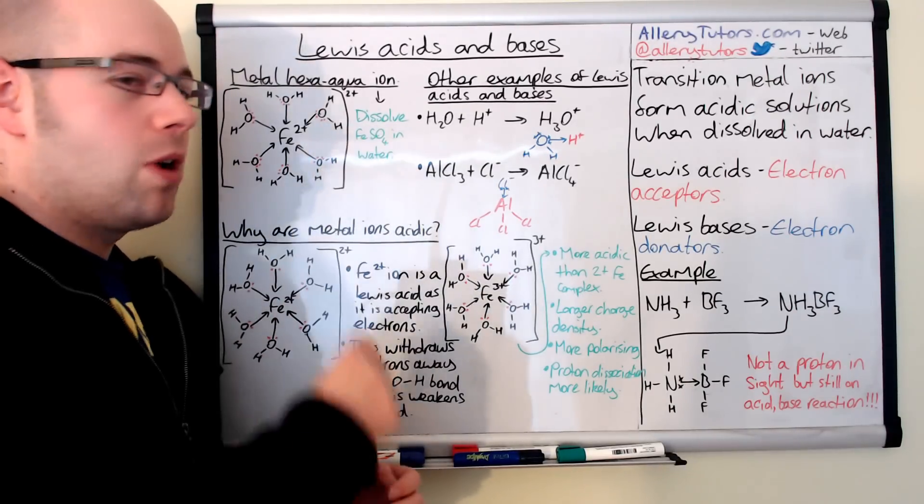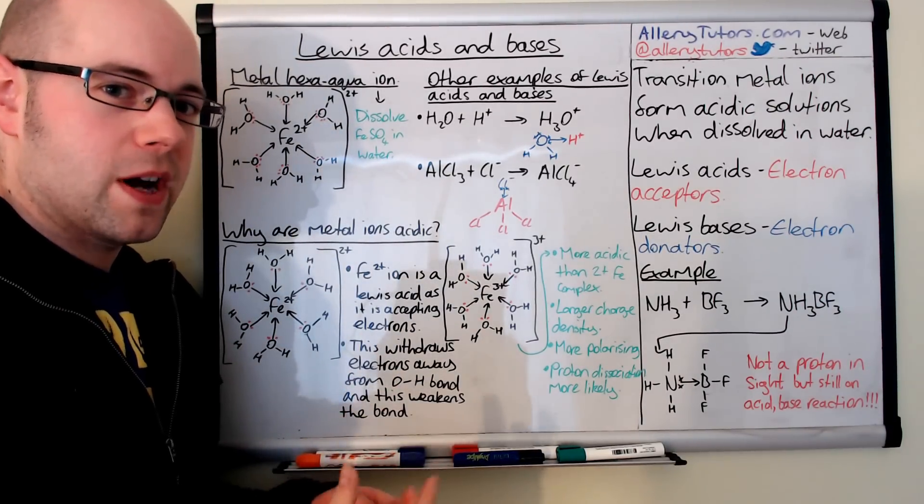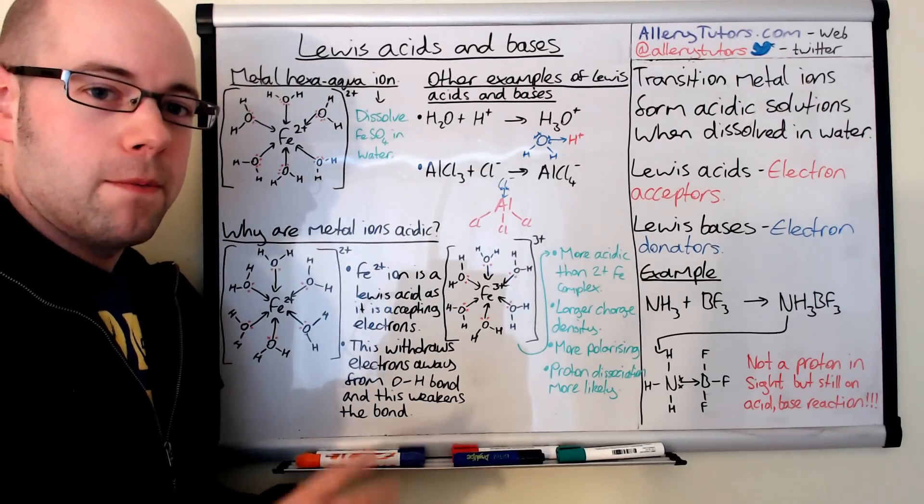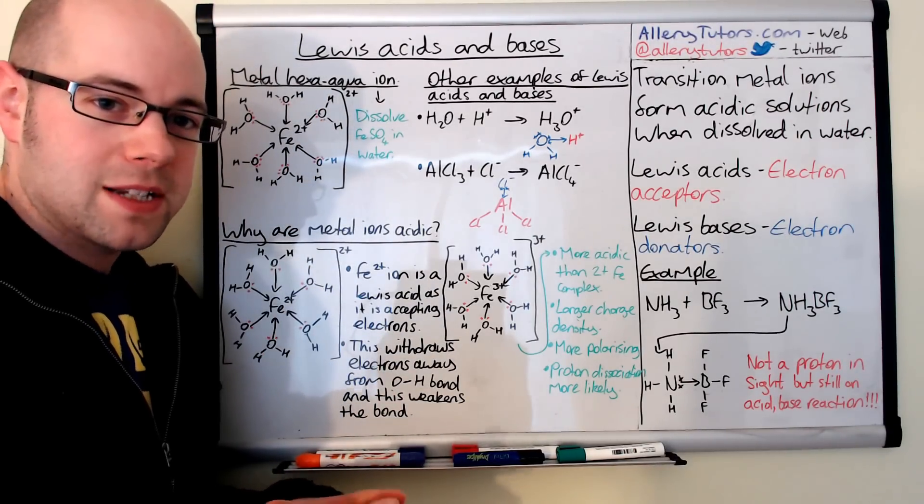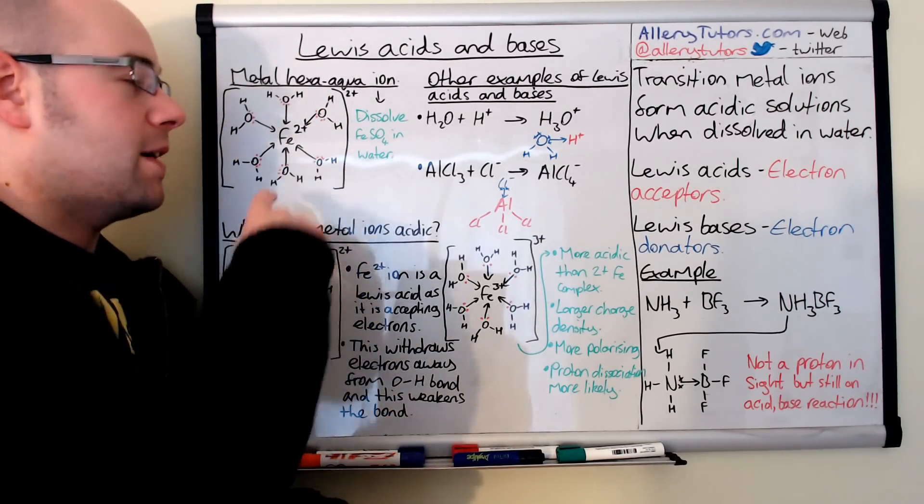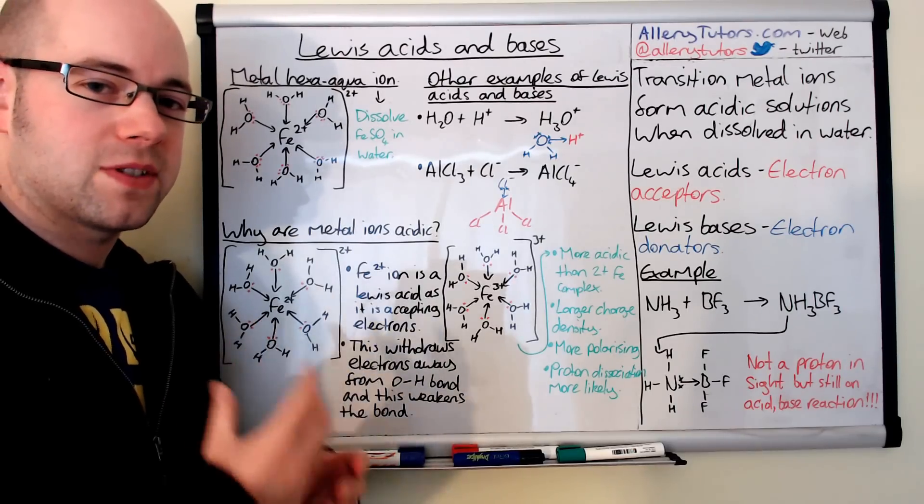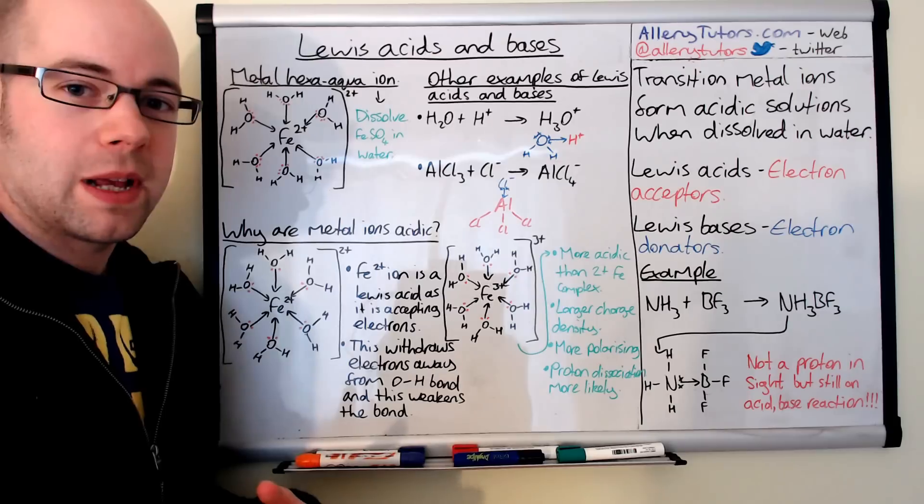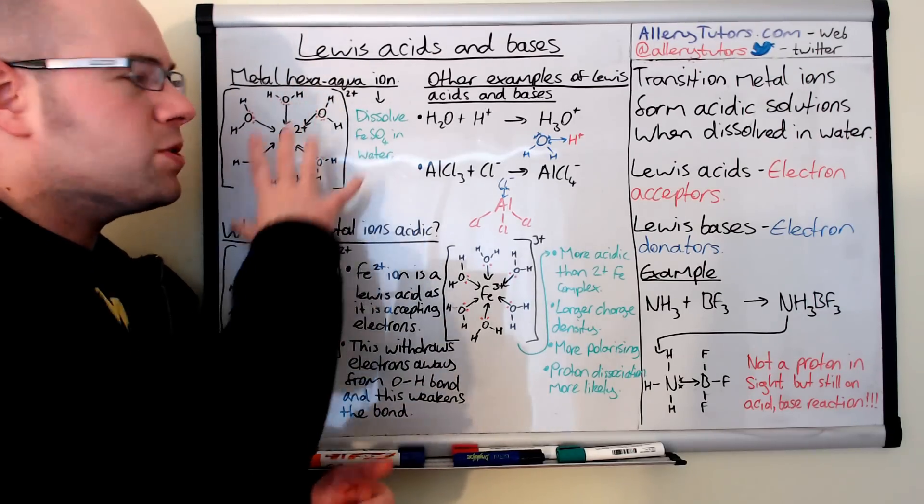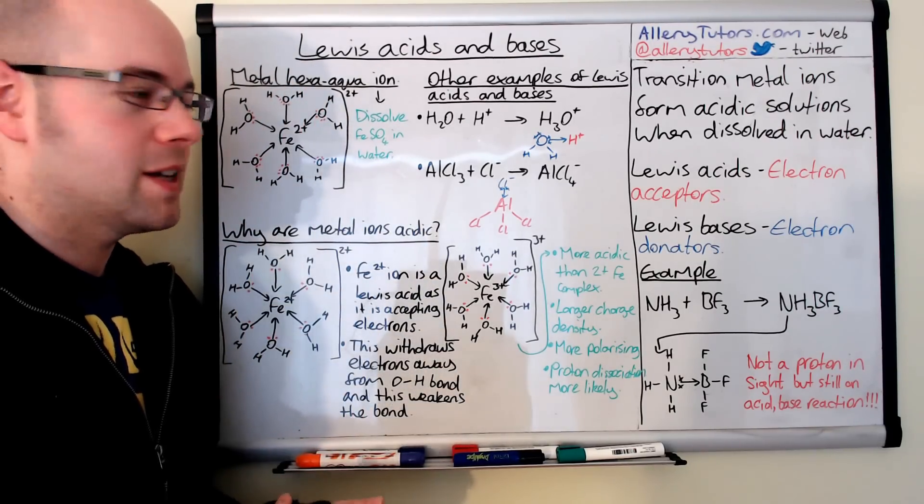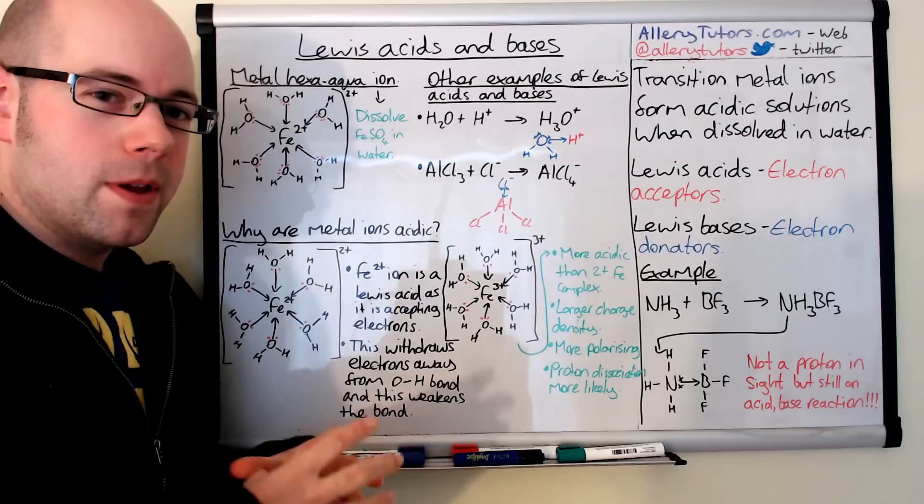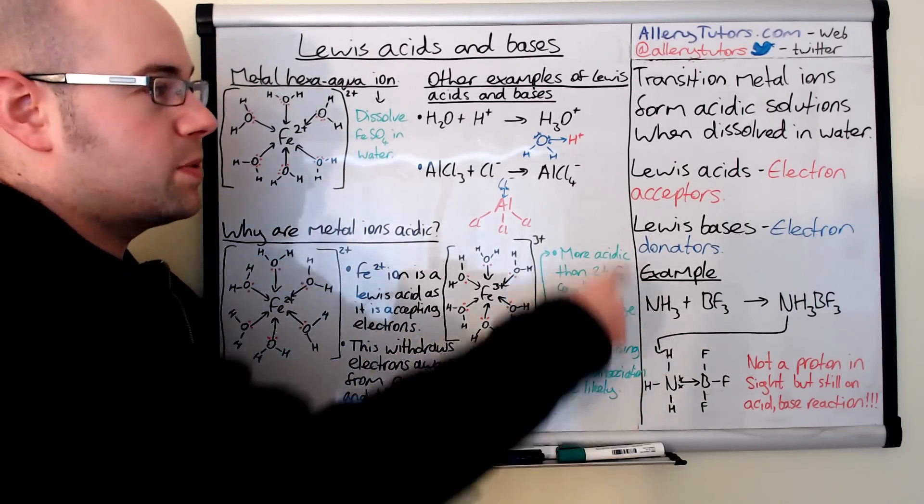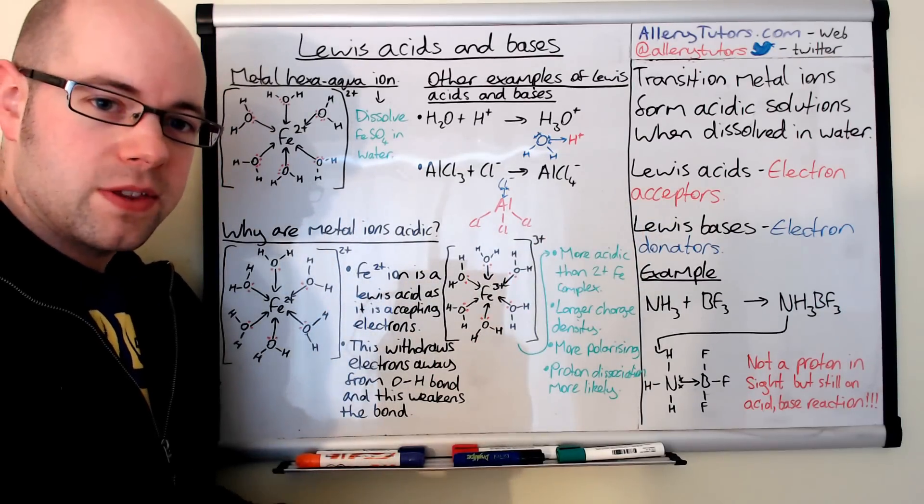The iron is no longer bonded to the sulfate but the sulfate ion is still in solution. Now the iron is surrounded by water ligands, and we call this a metal aqua-ion. Because we have six of them, we call it a hexa aqua-iron because we have six water molecules or ligands surrounding our transition metal ion. This is what happens when we have any transition metal—it gets surrounded by water. These things are actually acidic when they're in solution, and the reason why is because of the Lewis acid and base theory.